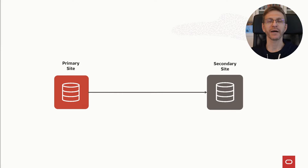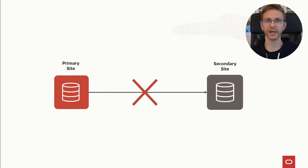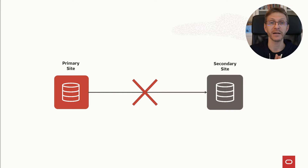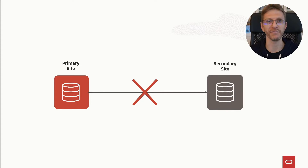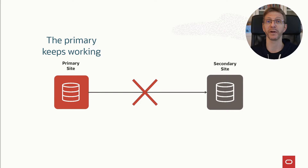When you have a DataGuard configuration without fast start failover, you have a primary database that sends information to the standby database and is synchronized. If at any point you have a disconnection, you can check that the primary database is healthy. The primary database will detect that the standby database is not there anymore and will just keep working, saying it's healthy and doesn't need to stop. There is no failover — it will just keep working without a standby database, except if you use maximum protection mode.